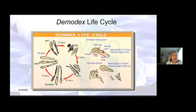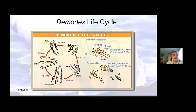We have the demodex life cycle shown nicely here from ovum to adult: the longer folliculorum, the male and female also having a different length, and the demodex brevis, the male and the female also having a different length. So if you know how to look at demodex, you sort of know — do I have a boy or a girl, do I have a brevis or a folliculorum — and what's their story?